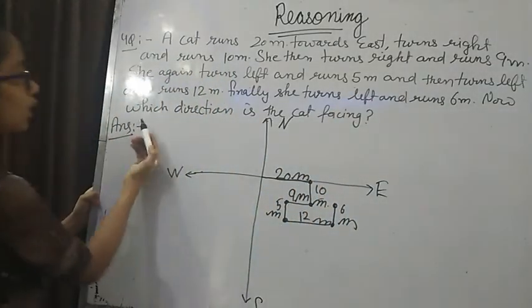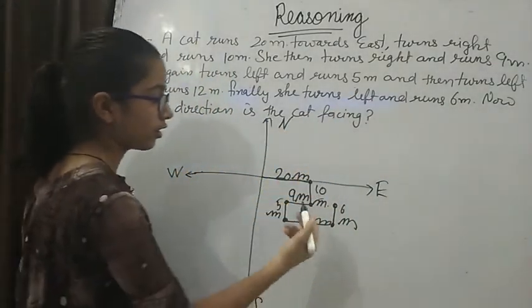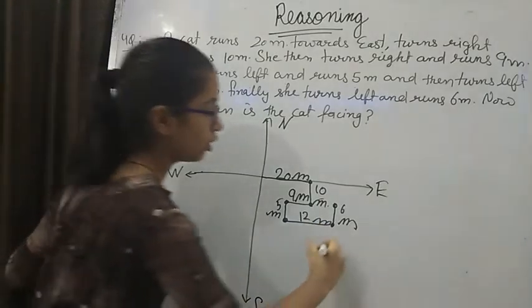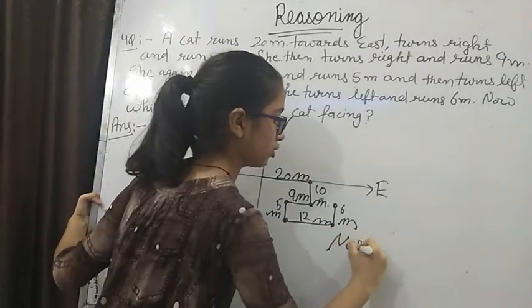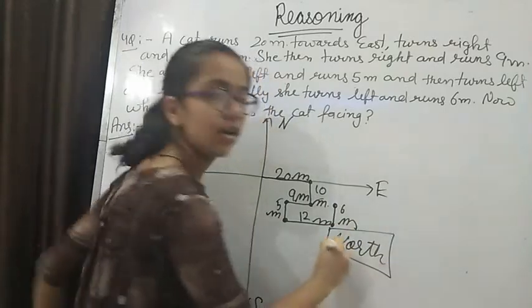Finally she turns left and runs 6 meters. Now which direction is the cat facing? The cat is facing north direction. So our answer is north.